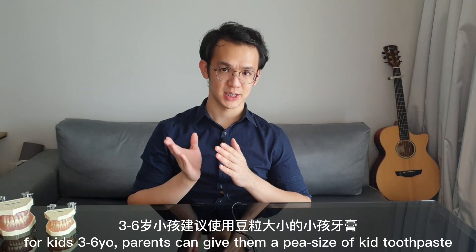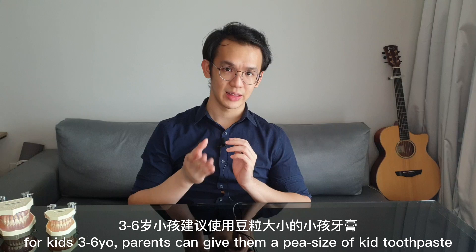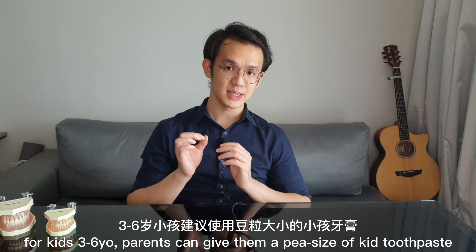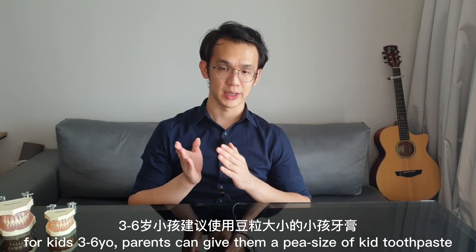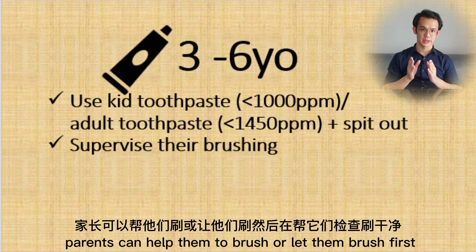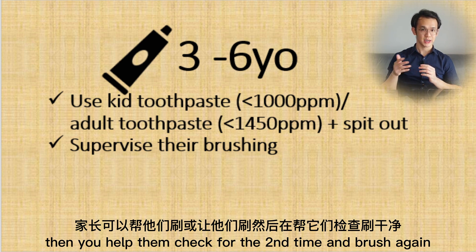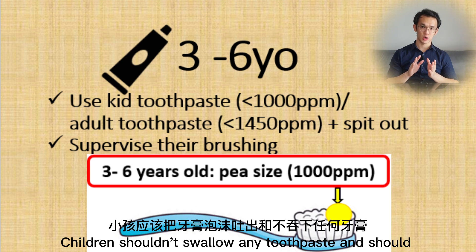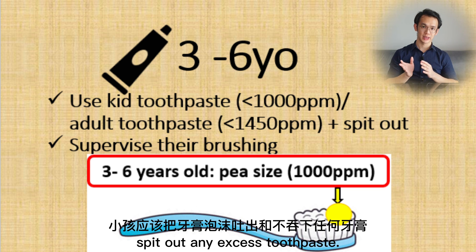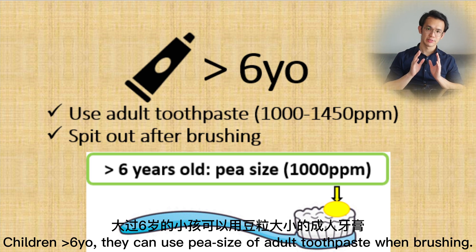For kids three to six years old, parents can give them a pea-sized amount of kid's toothpaste or xylitol toothpaste. Parents can either help them brush or let them brush first and then check and brush again to make sure their teeth are clean. Children shouldn't swallow any toothpaste and should spit out any excess after brushing.